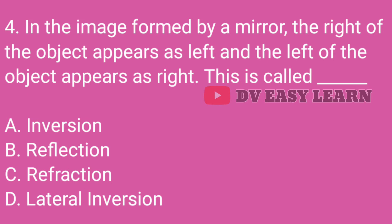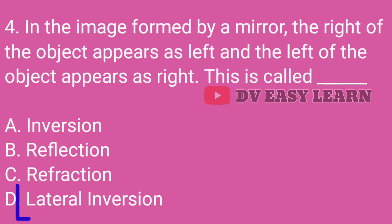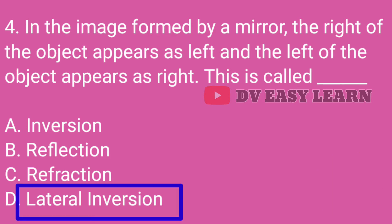Question No. 4: In the image formed by a mirror, the right of the object appears as left and the left of the object appears as right. This is called — Correct answer: Lateral inversion.